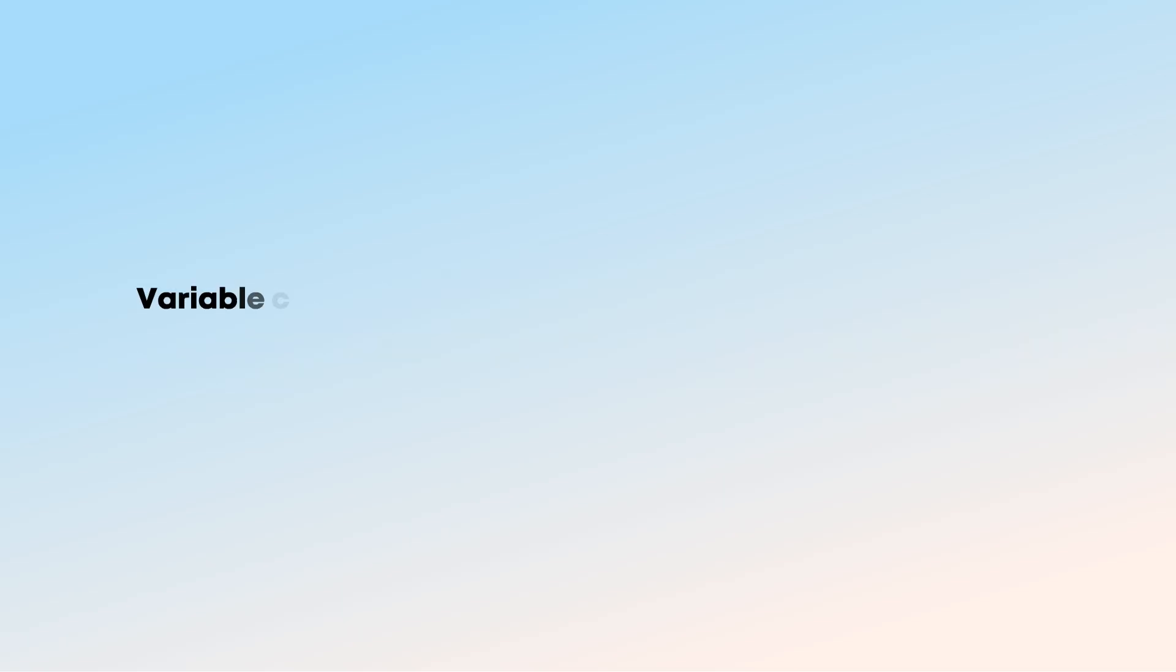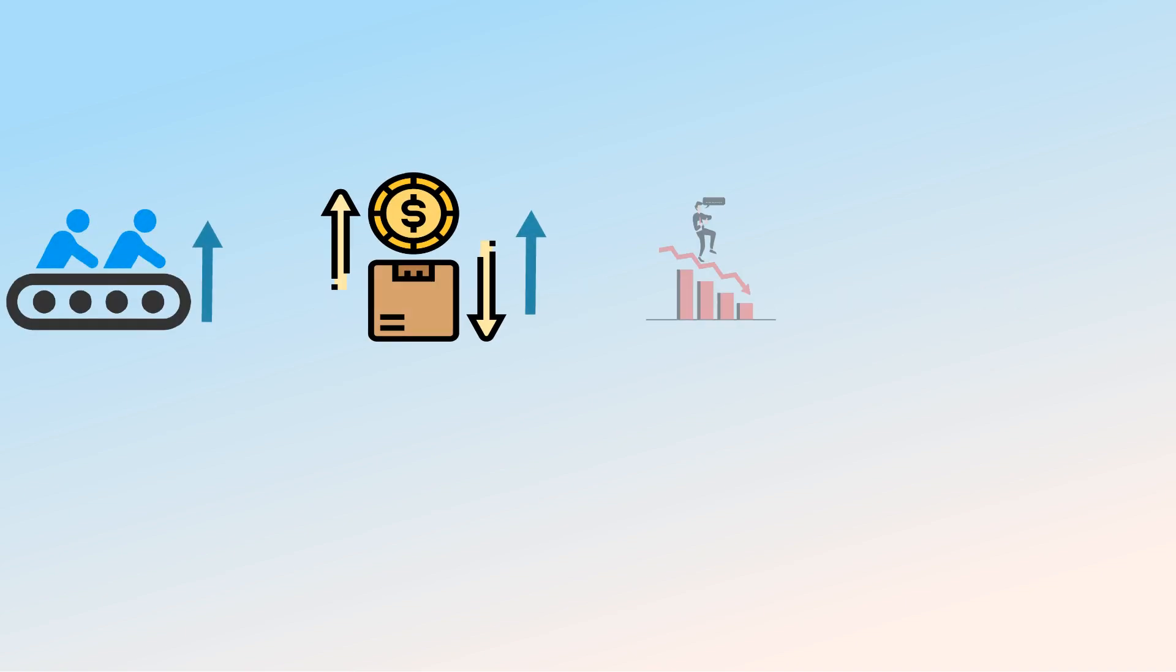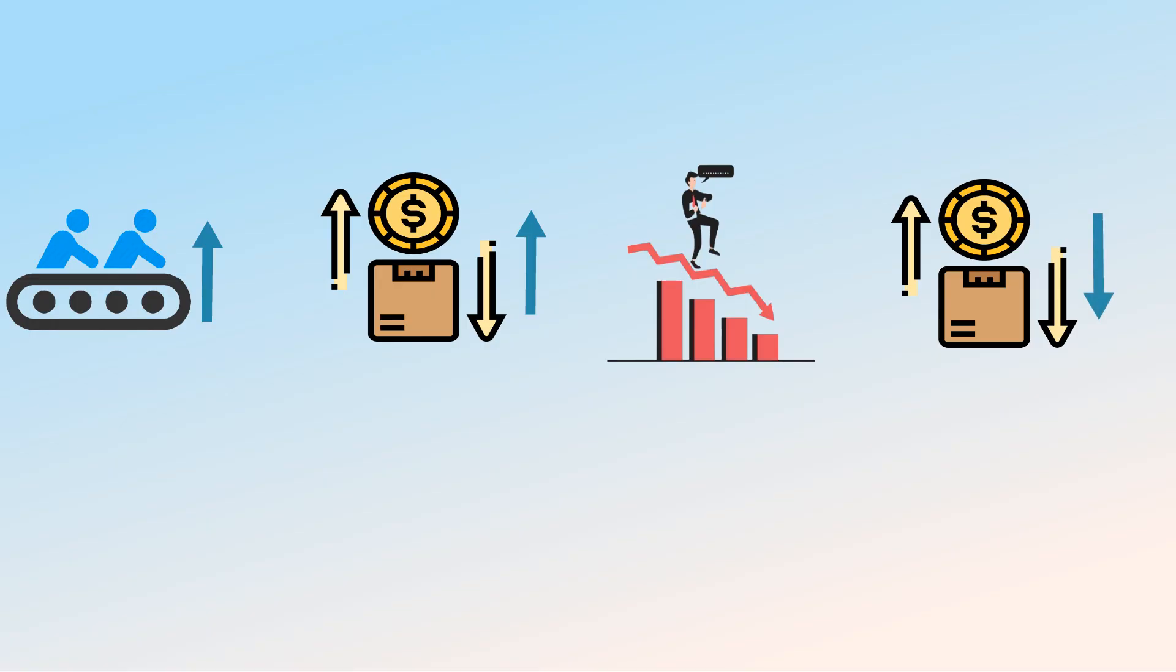Now come to variable costs, the fluctuating followers. Variable costs change in direct proportion to your business activity level. As production increases, variable costs rise. When business slows down, these costs decrease accordingly.